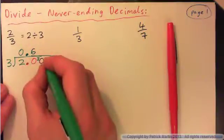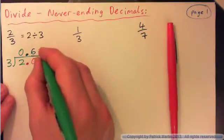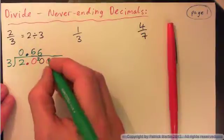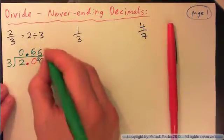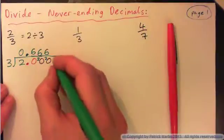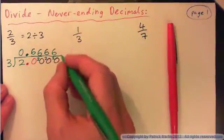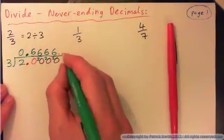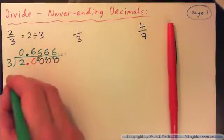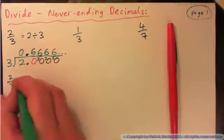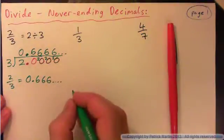And now you've got 3 into 20, which goes 6 times, remainder 2. And again 3 into 20 goes 6 times, remainder 2. That's going to keep going on forever. So 2 thirds is equal to 0.666 going on forever.